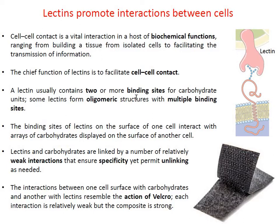Lectin proteins usually contain two or more binding sites and may have multiple binding sites if they form oligomeric structures. Often these lectin-to-glycoprotein interactions are weak in nature, but there can be several interactions on a cell surface. These several weak interactions come together to form a stronger interaction, resembling the action of velcro, where multiple weak interactions combine to form a stronger composite.